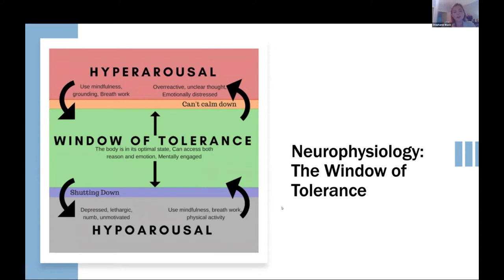In hypoarousal, everything in your body will slow down — you become numb, lethargic, and your systems slow as much as possible to direct resources where they need to go. In classrooms, you may see this as shutting-down behaviors: students who suddenly disengage, whereas a student in hyperarousal may be more reactive, defensive, or having trouble focusing on one thing.